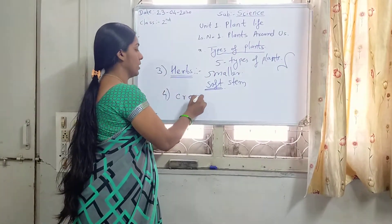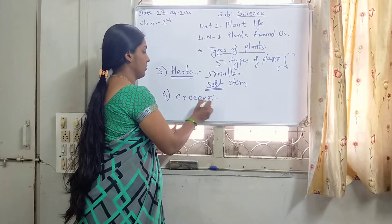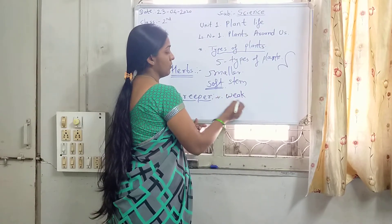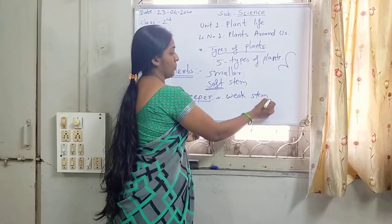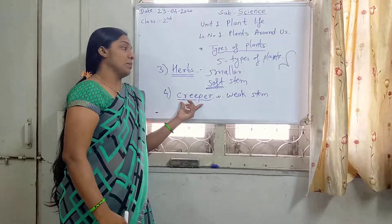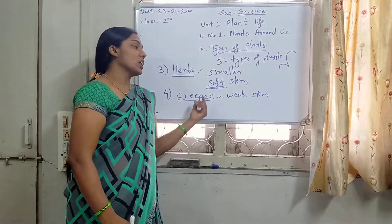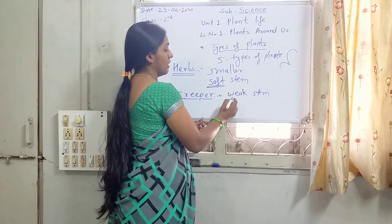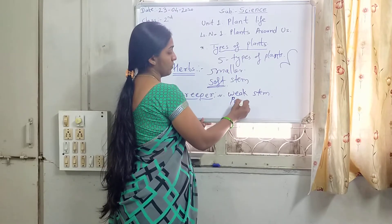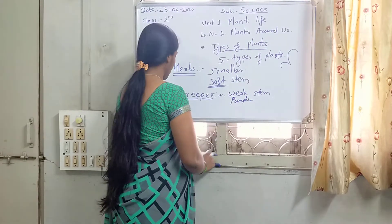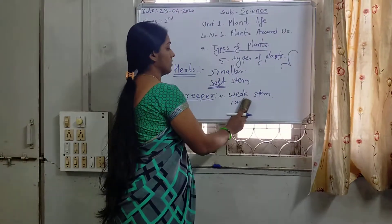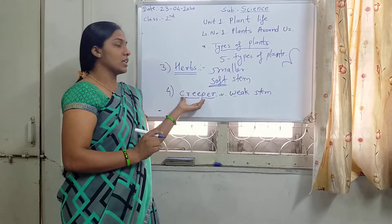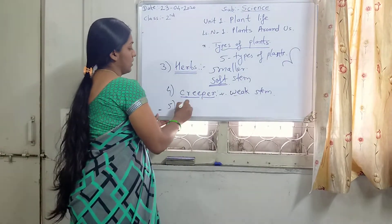The 4th type is Creeper. Creepers have a very weak stem and grow along the ground. The example is Pumpkin. Bottle gourd is not a creeper — it is a Climber.